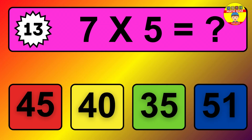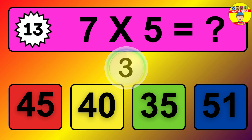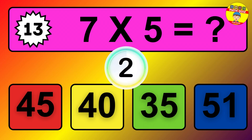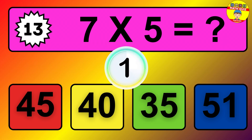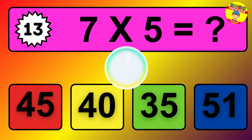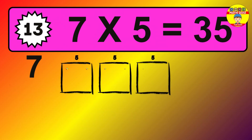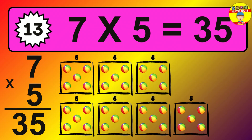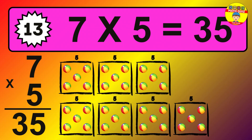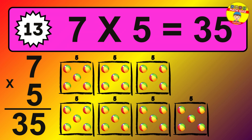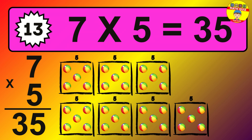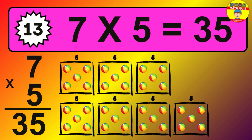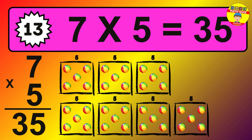Question 13. 7 times 5 equals what? The answer is 7 times 5 is 35. To calculate, we have 7 groups with 5 balls each one. So, how many balls do we have? 35 balls.